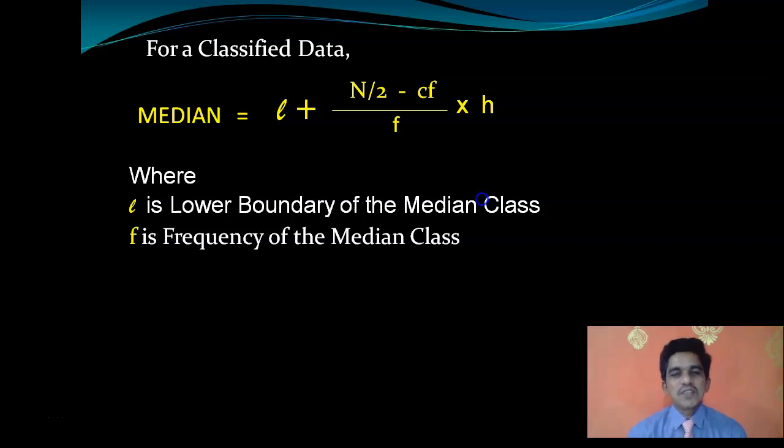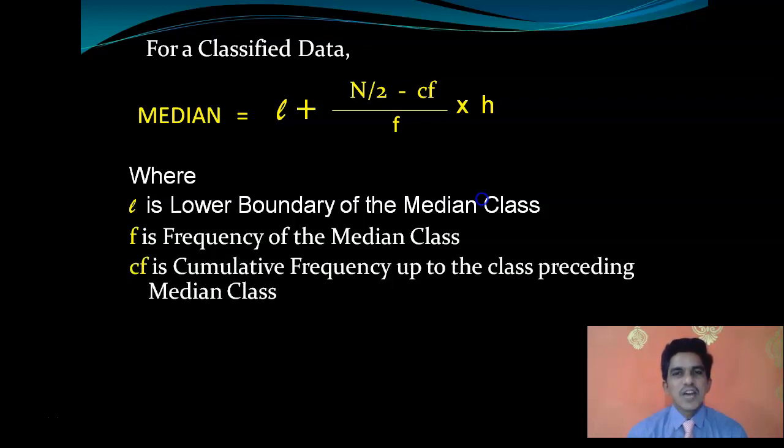F is the frequency of the median class. Here you have a different concept called cumulative frequency.